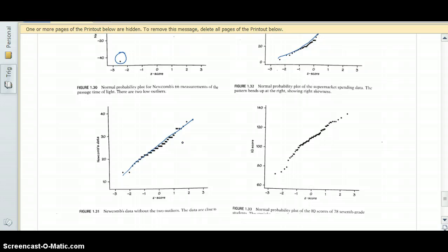And then the last normal probability plot shows the IQ scores of 78 seventh grade students. In this one, there's a little bit of a curve to it, but the overall pattern is fairly straight. So we would say that this data is approximately normal, too.